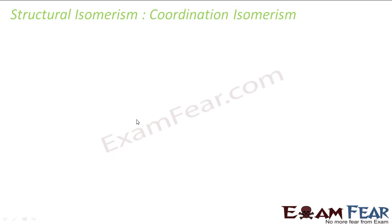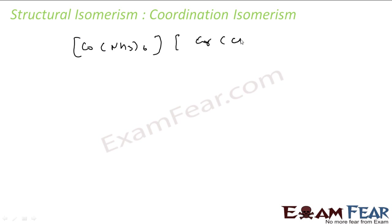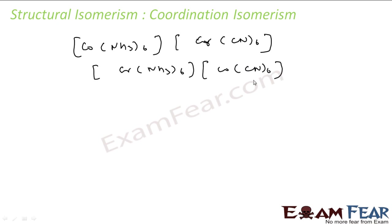Let's study coordination isomers. This type of isomerism exists in coordination compounds made up of both a cationic and an anionic complex. It arises from the interchange of ligands between the anionic and cationic entities. For example, I have [Co(NH3)6] and [Cr(CN)6]. If instead I make [Cr(NH3)6] and [Co(CN)6], cobalt is now bonded to CN and chromium is bonded to NH3.